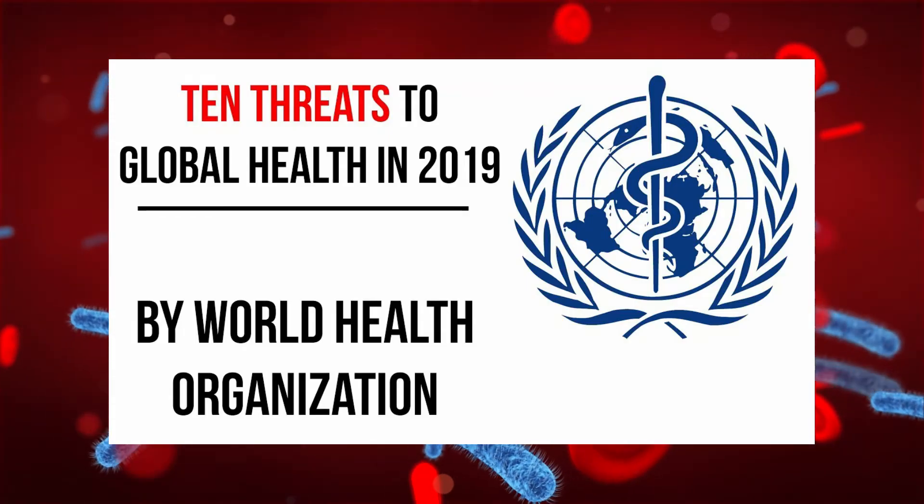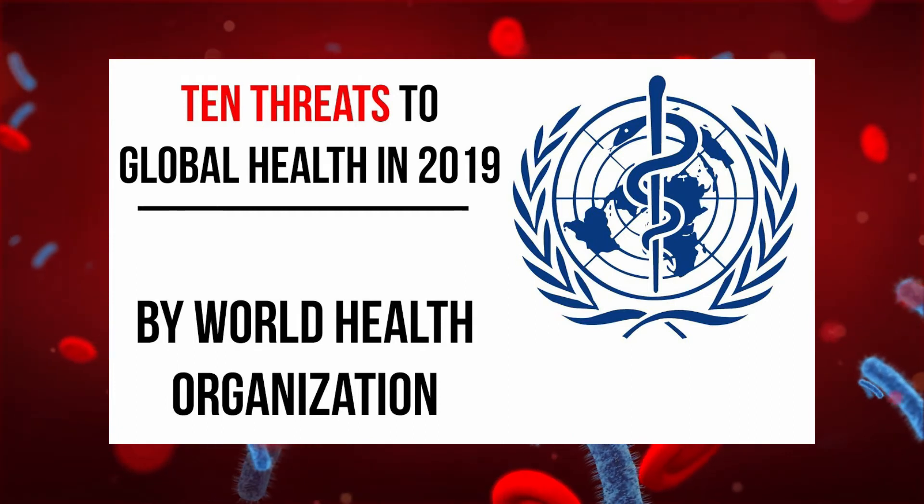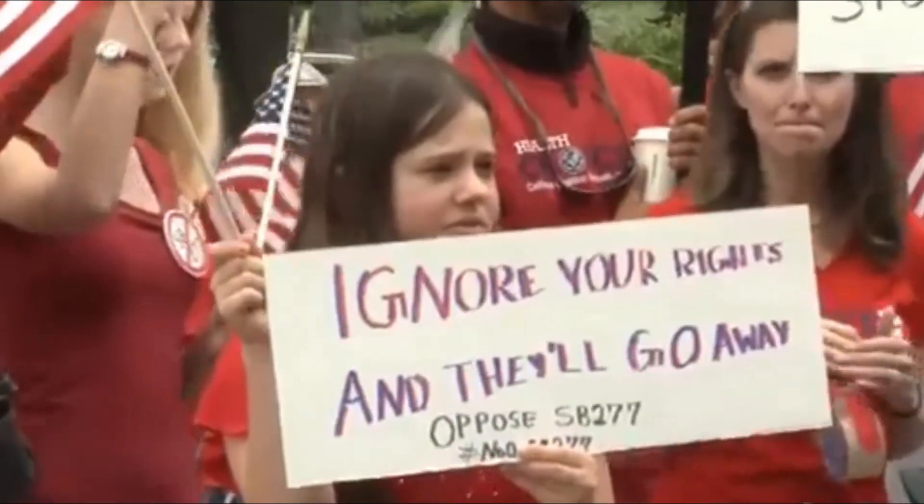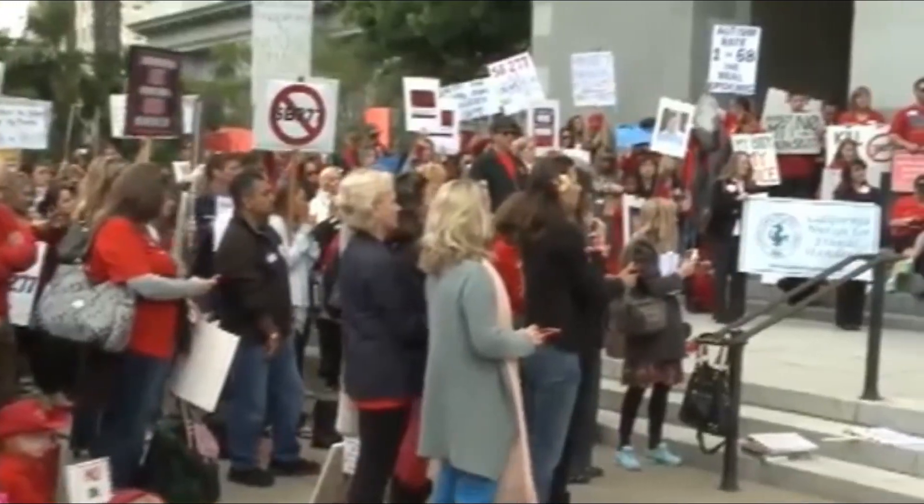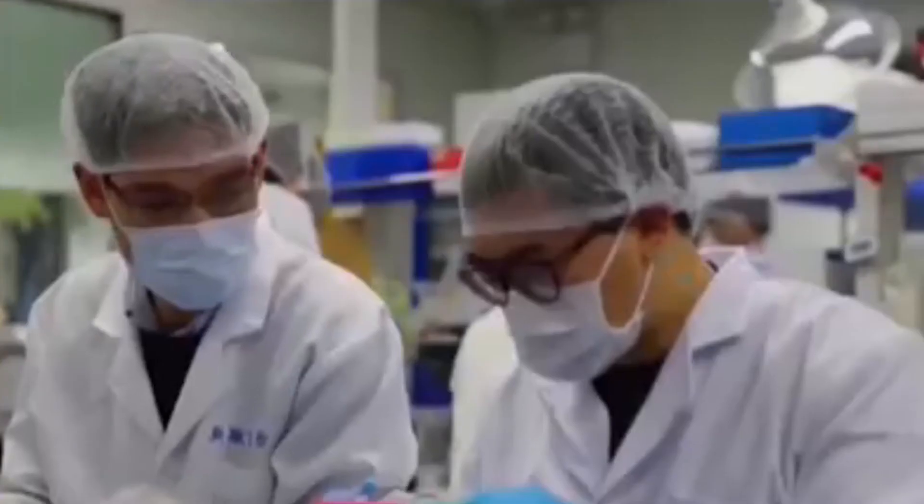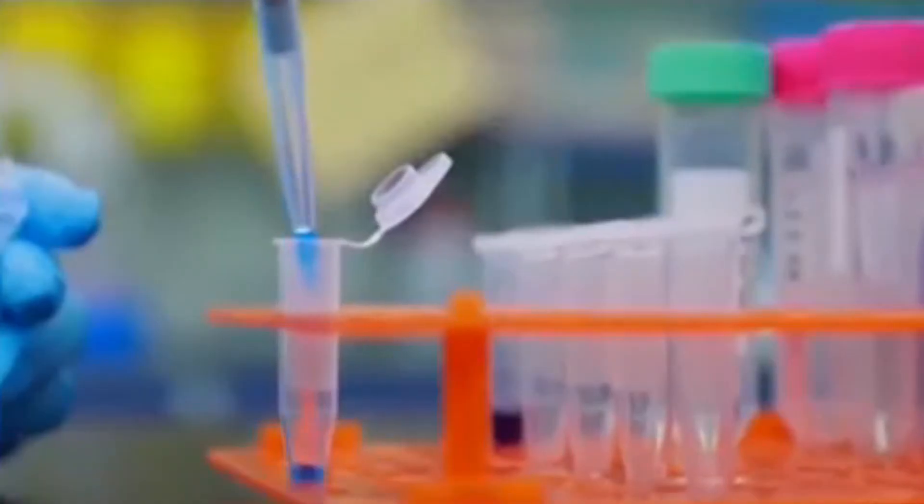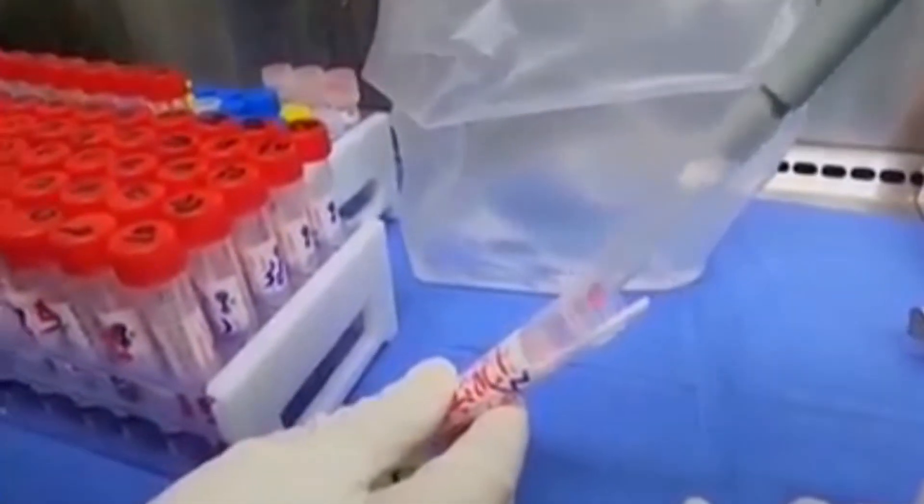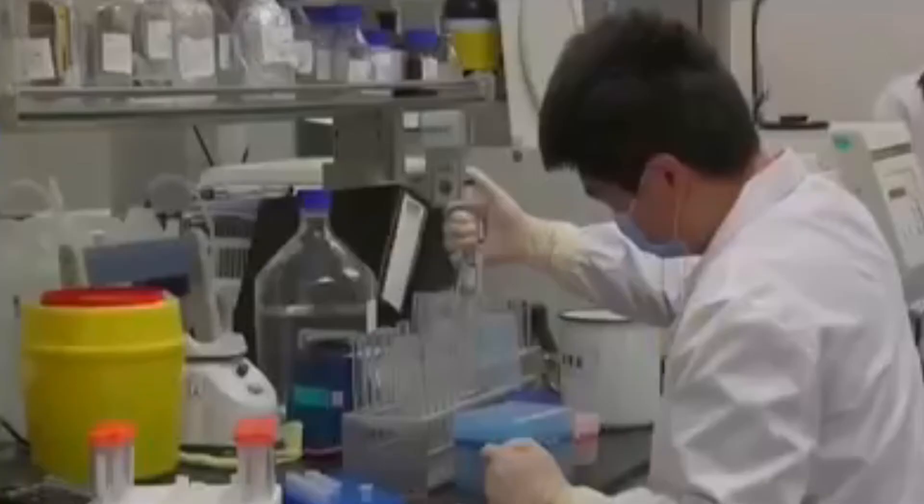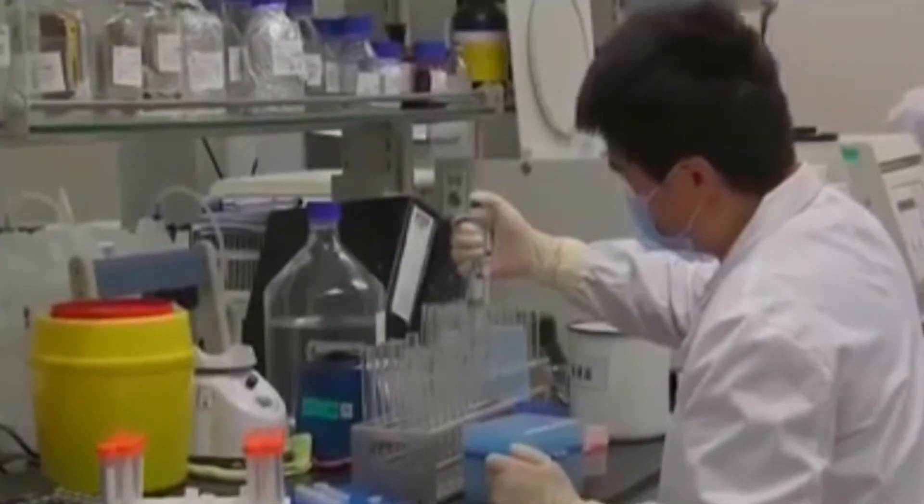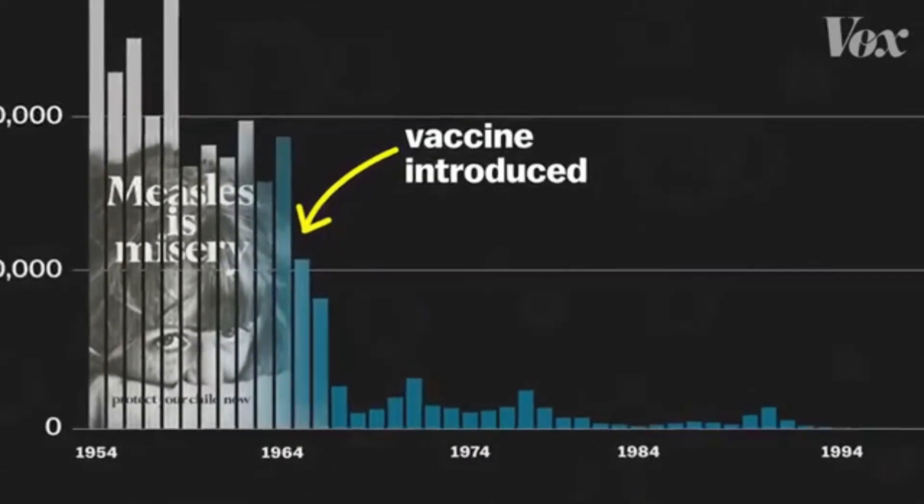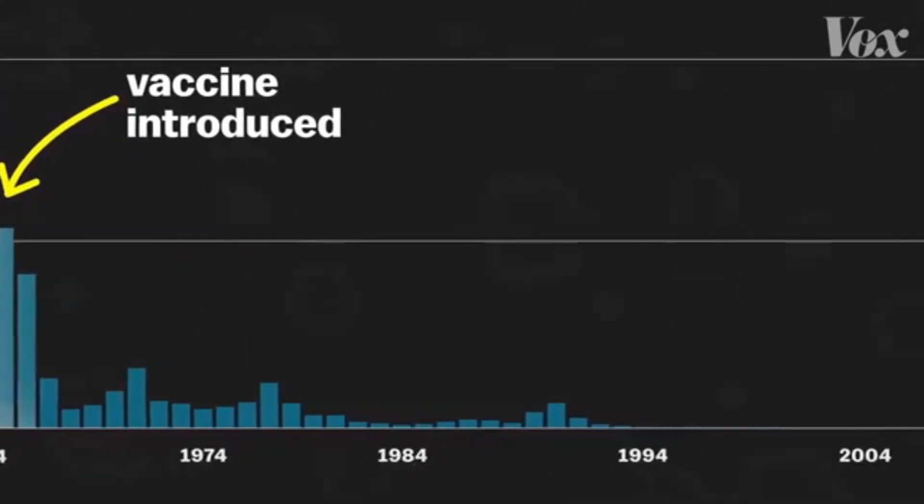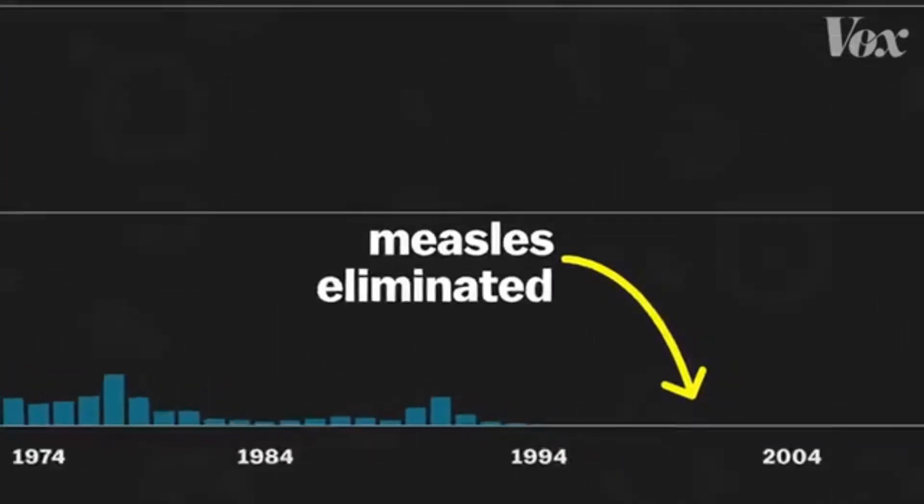The anti-vaccination movement made the list of the World Health Organization's top threats to global health in 2019. The organization said some people's reluctance or refusal to vaccinate threatens to reverse progress made against a host of preventable diseases. According to the WHO, vaccination is one of the most cost-effective ways of avoiding disease. It currently prevents 2-3 million deaths a year, and a further 1.5 million could be avoided if global coverage of vaccinations improved. The effects of what the WHO called vaccine hesitancy are already significant. For example, cases of measles have surged 30% worldwide in recent years, despite an effective vaccine that can prevent it.